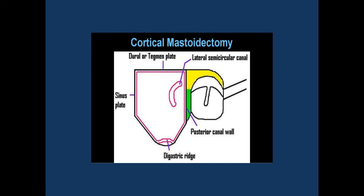The limits of cortical mastoidectomy are: in front, the posterior superior bony meatal wall; above, the tegmen plate, also called the dural plate; behind, the sinus plate — the plate of bone that lies over the sigmoid sinus; and inferiorly, the limit of clearance is the digastric ridge.